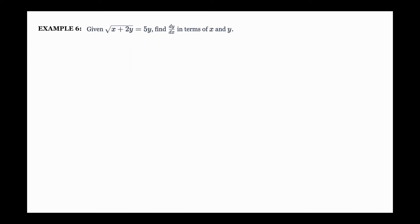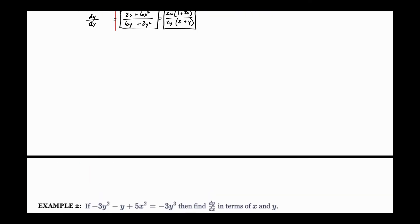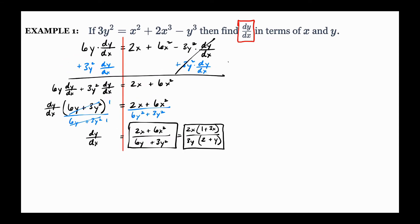On Friday we started and did examples one through five. To review the process: we're finding derivatives and we still use the same rules — power rule, product rule, quotient rule, sum difference rule, chain rule. All the same rules, nothing new.